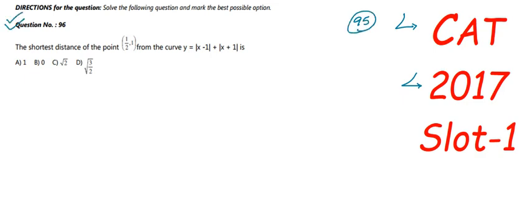Question 96 is: the shortest distance of the point (1/2, 1) from the curve y = |x - 1| + |x + 1|. We need to find the shortest distance of this point from the given curve.